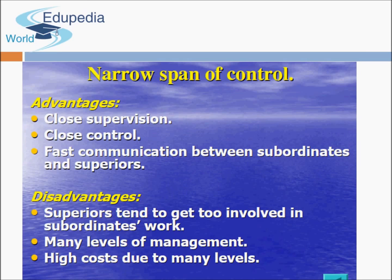Advantages of a narrow span of control include close supervision — because few people report to you, you can supervise them closely — close control, and fast communication between subordinates and superiors. Disadvantages include that superiors tend to get too involved in subordinates' work, a very tall hierarchy results, and higher costs due to many management levels.